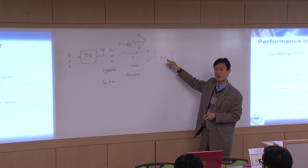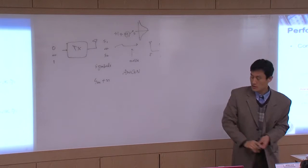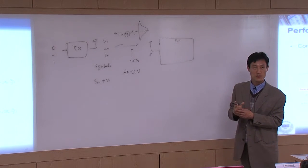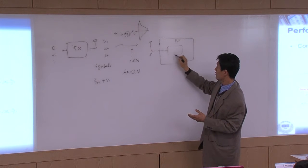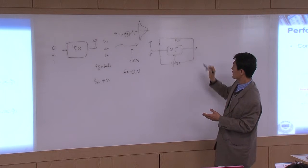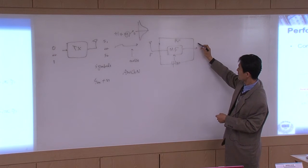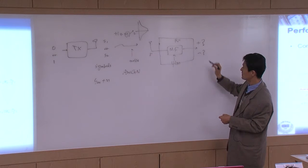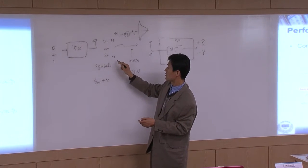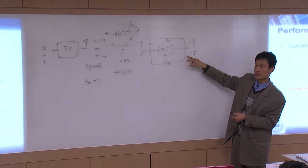Inside the receiver, we learned the optimum receiver, and we learned two different ways to implement it. One is correlation-based; the other is a matched filter. But eventually both are the same thing. So inside the receiver we run the matched filter and get an output. For antipodal signaling, we check if this output is plus or minus to make a decision. That's the whole scenario.